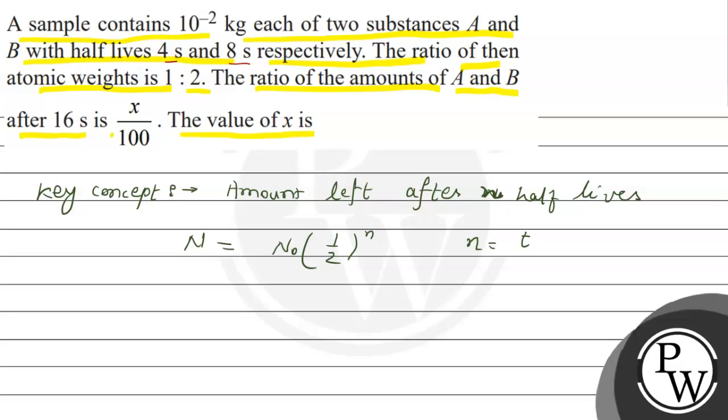This means t upon t half. Capital T is half-life time period. This is sample A for 4 seconds and sample B for 8 seconds.